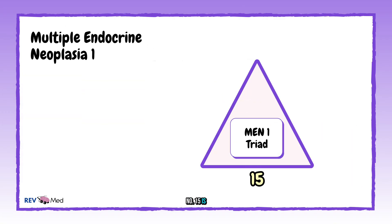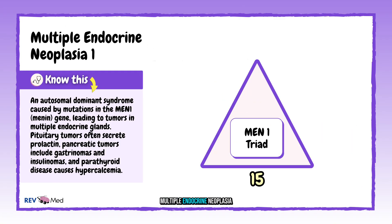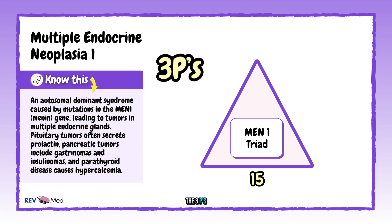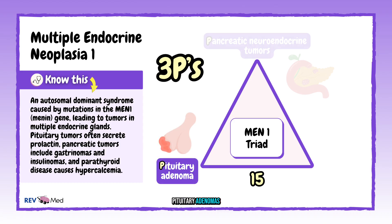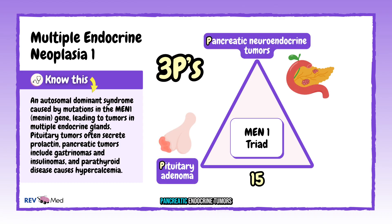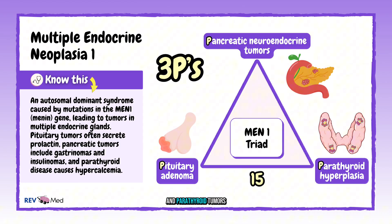Number fifteen: multiple endocrine neoplasia type one — MEN1. The three P's: pituitary adenomas, pancreatic endocrine tumors, and parathyroid tumors.